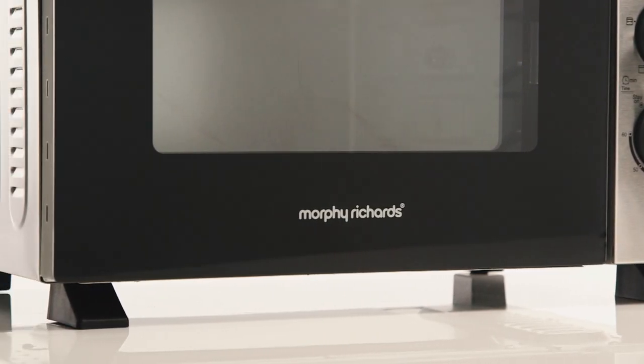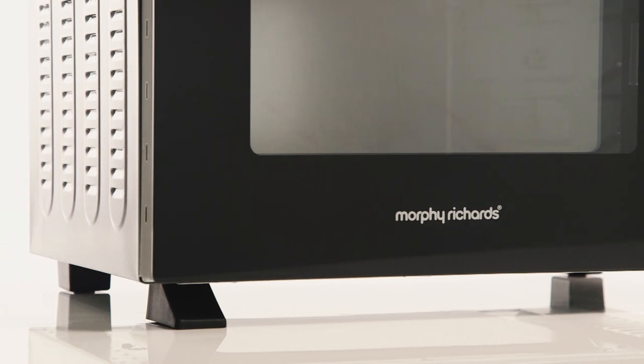Firstly, place the oven on a stable heat resistant surface like a worktop. Additionally, ensure that it is placed away from flammable materials.